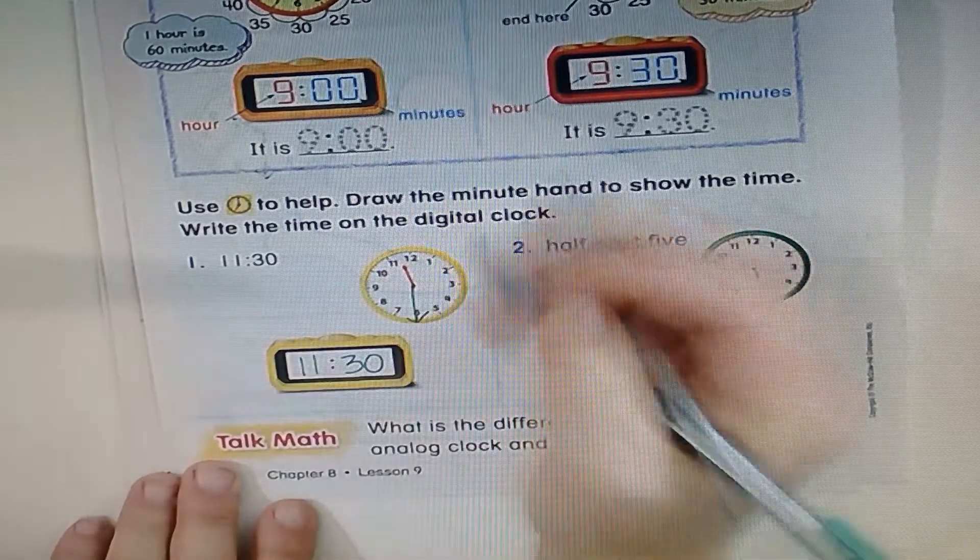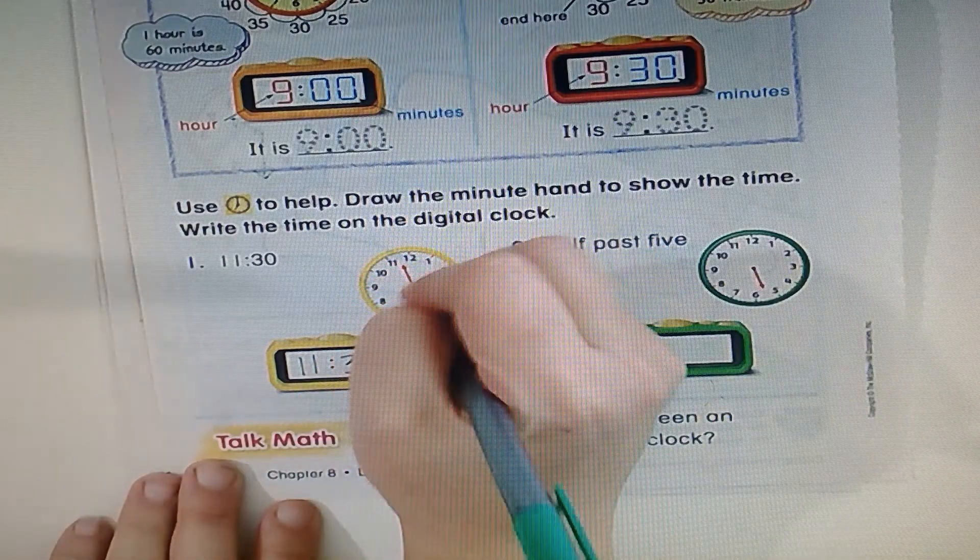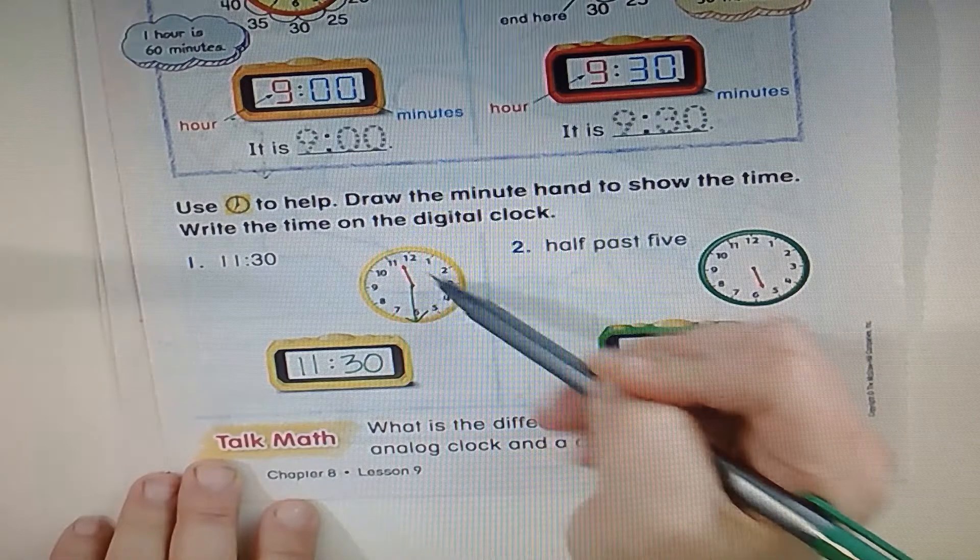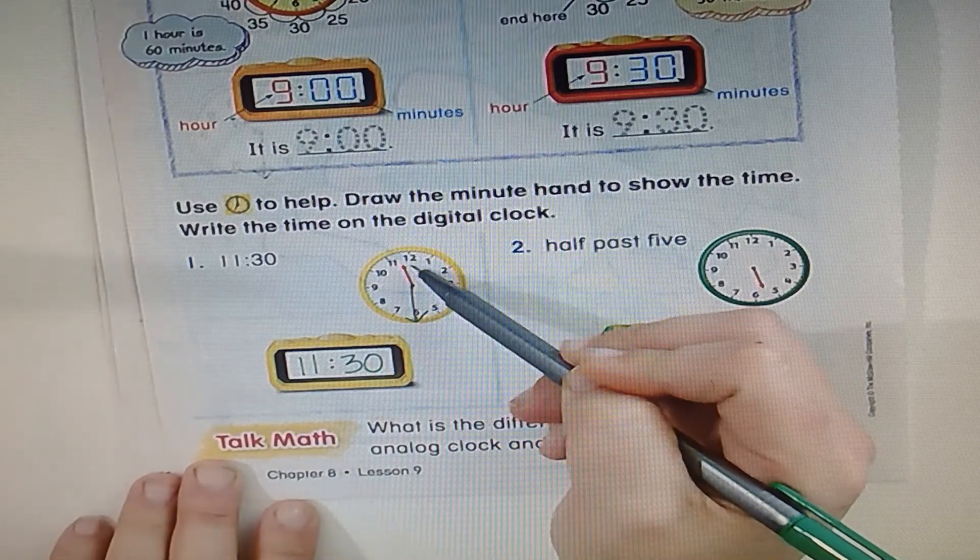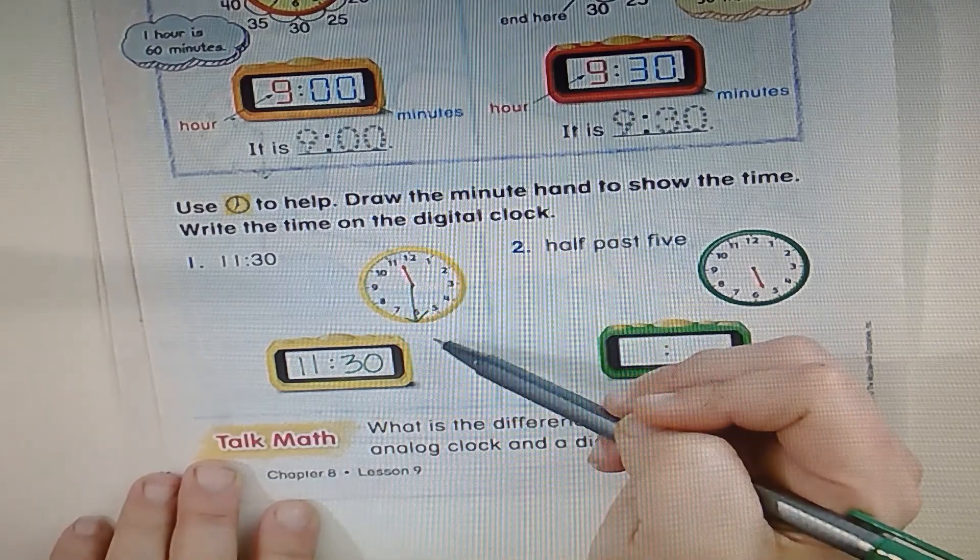How come it's not 12:30? The reason is because this hand is always moving in a clockwise direction. And so when we're here, it hasn't made it to the 12 yet, so it's still 11:30.